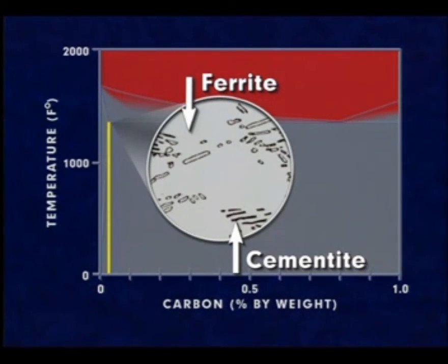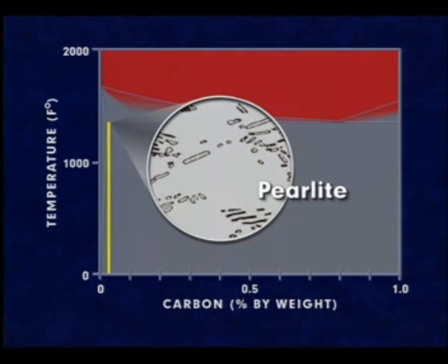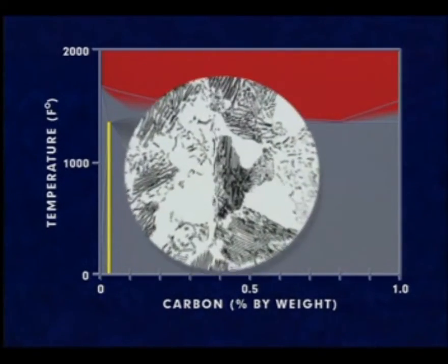This structure is referred to as pearlite. At room temperature, the steel is mostly ferrite, with patches of pearlite.